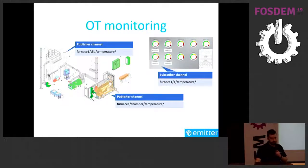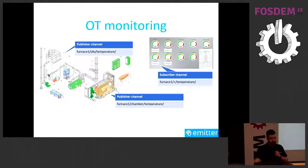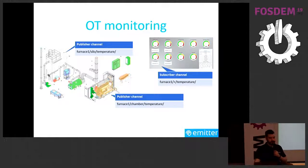Another use case is OT monitoring. We had a user with a crematorium — it has various pieces of machinery, each with sensors. For example, a silo has a temperature sensor and so does a chamber. The silo publishes to /silo/temperature and the chamber to /chamber/temperature. A dashboard written in Python using our Python SDK uses a gauge that subscribes to +/temperature — the '+' wildcard replaces one level — so it subscribes to all temperature sensors at once.